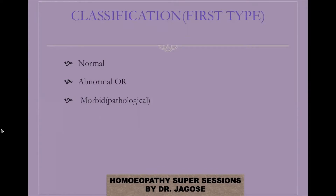Normal susceptibility means that the vital force is in harmony with the external and internal environment. As long as the vital force is functioning properly and adapting itself to the external and internal environment, normal health will be maintained — homeostasis is maintained and the internal milieu is in harmony. That is why the person enjoys a state of good health.